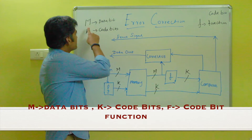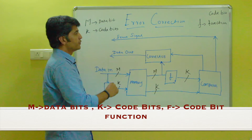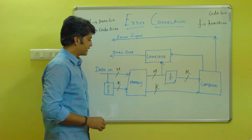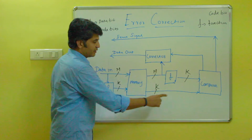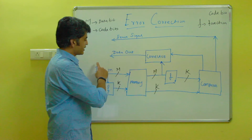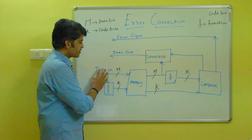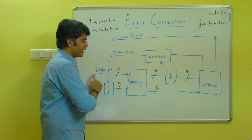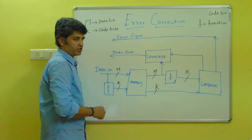This is the block diagram of the error correcting code function. In this block diagram we need to remember three things: m is the data bit, k is the code bit, and f is the code bit function. In the diagram, there is the memory, the comparator, and the comparison function, along with lines for data in, data out, and error signal. Here, m is the data bit that is sent to the particular memory location.